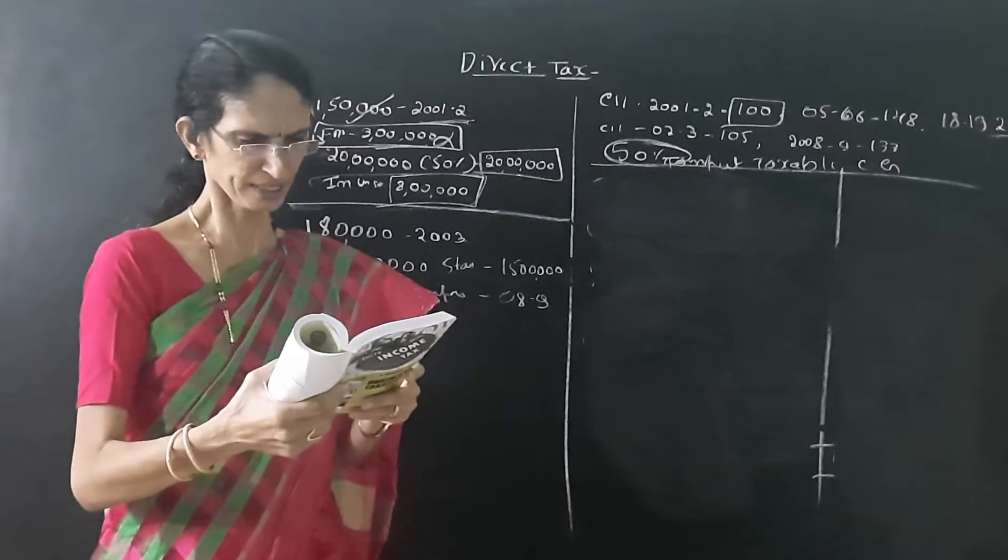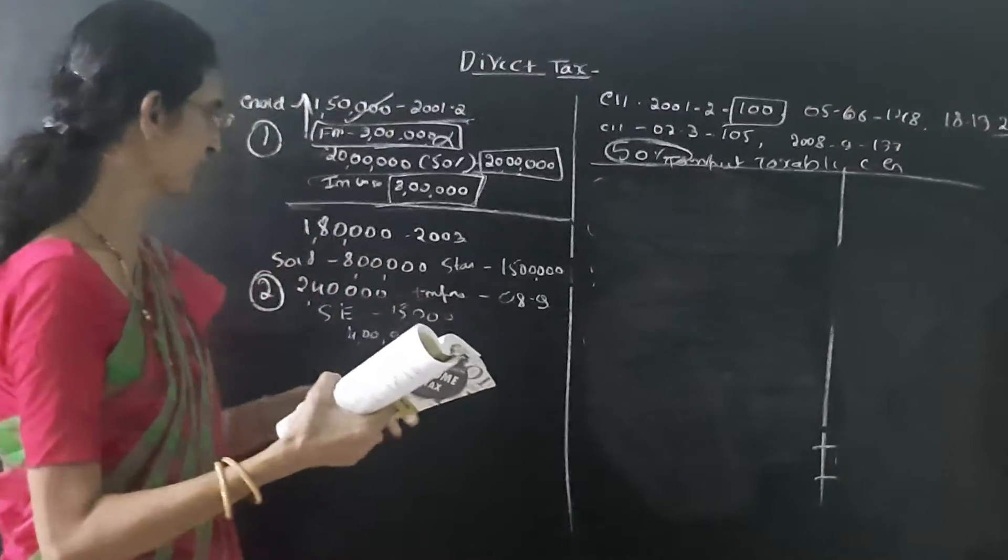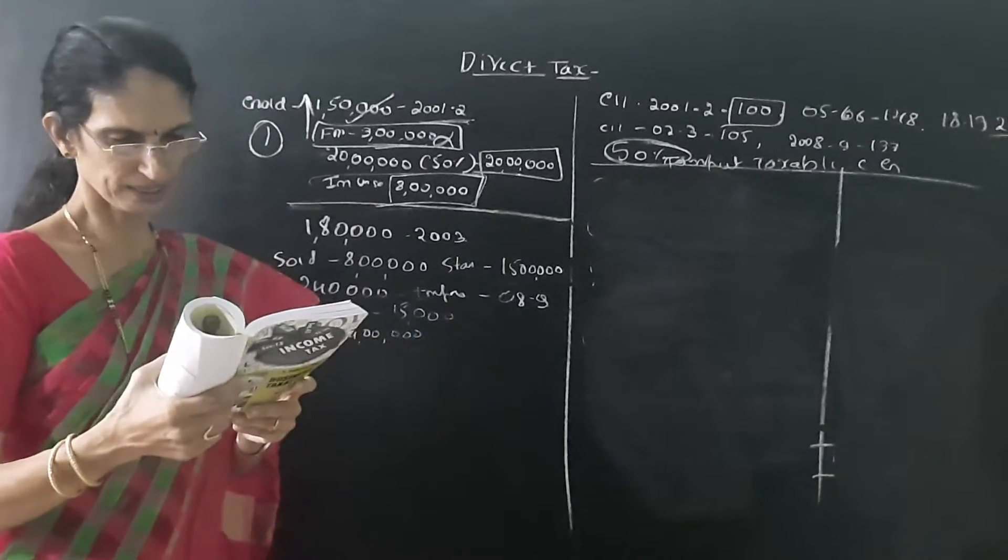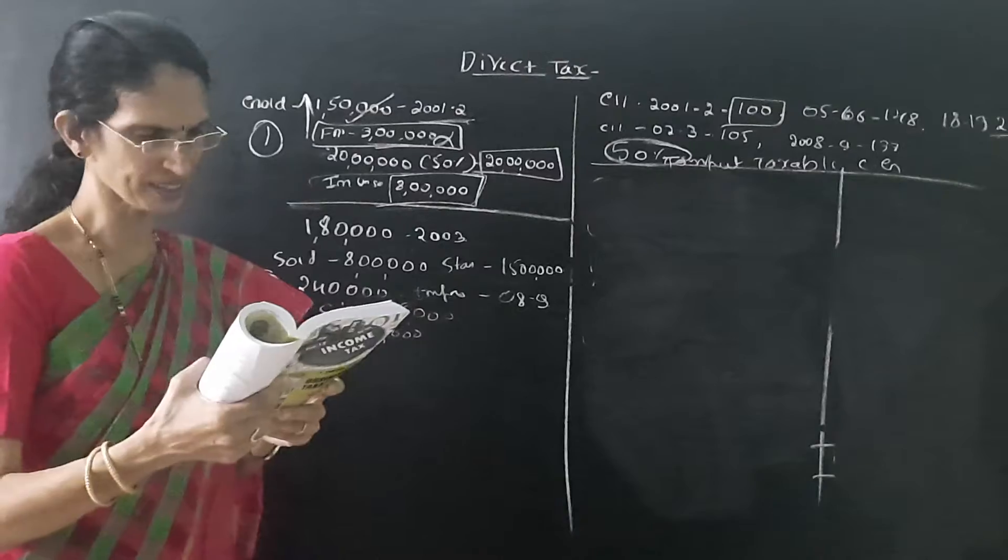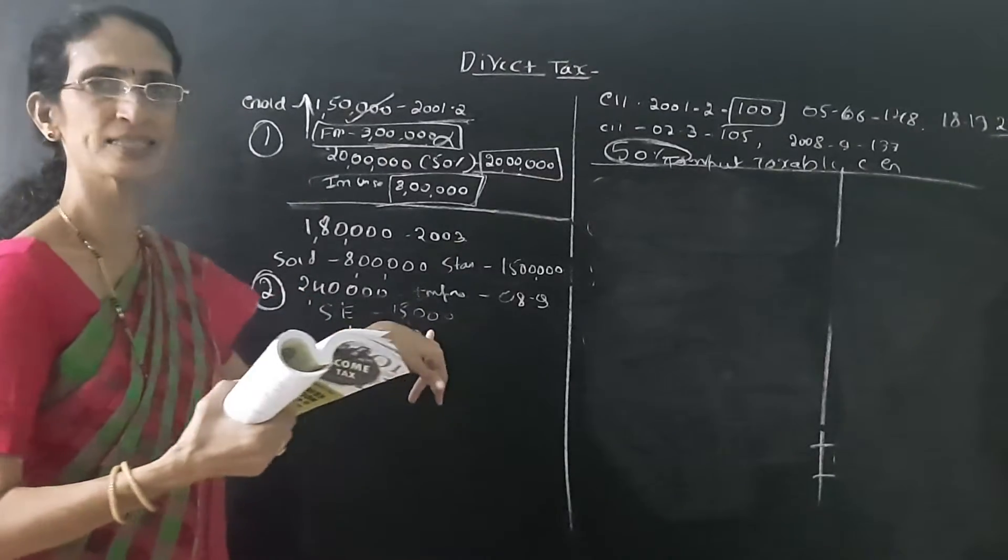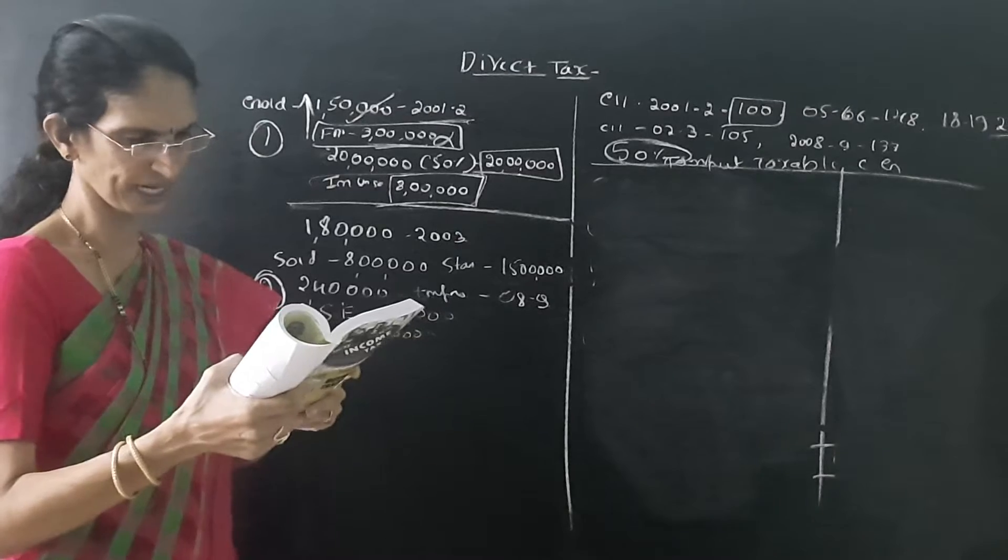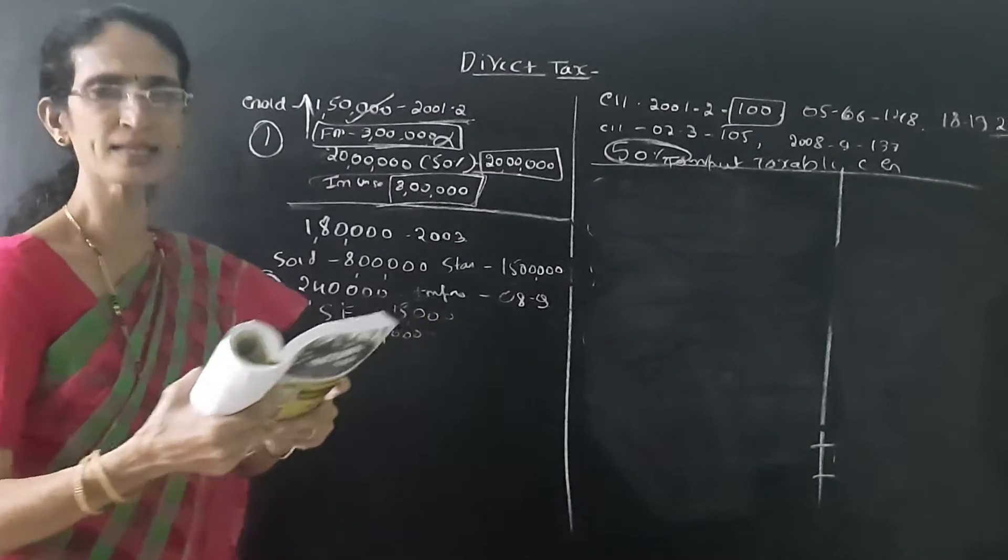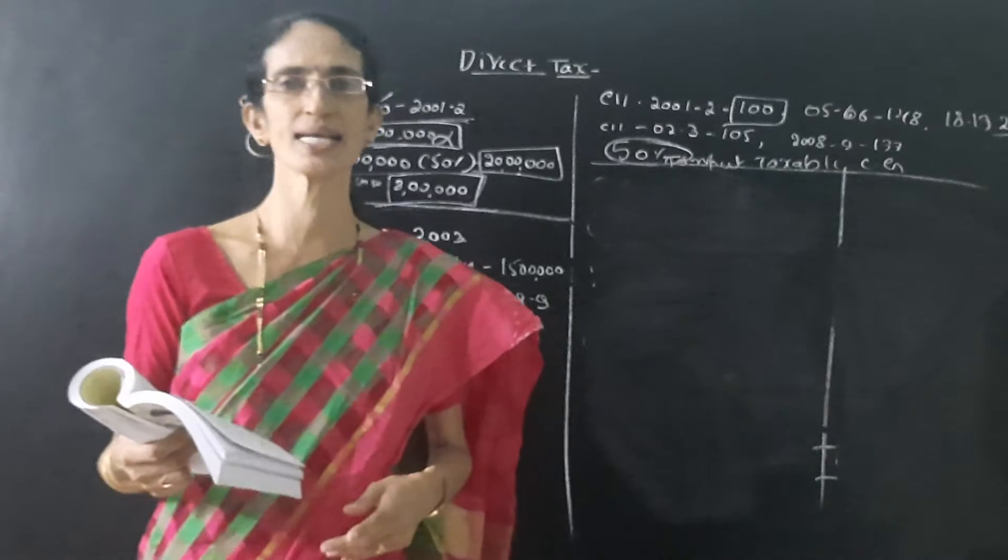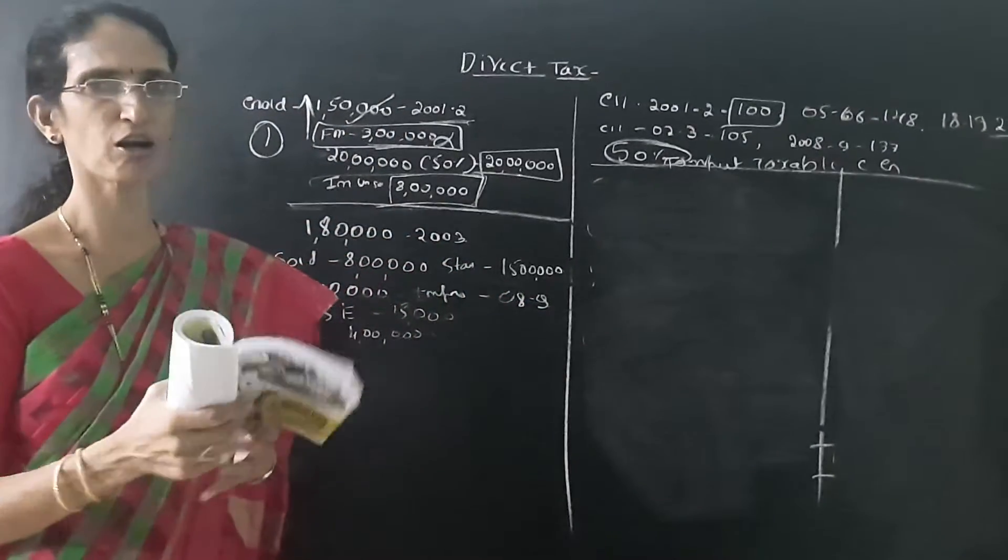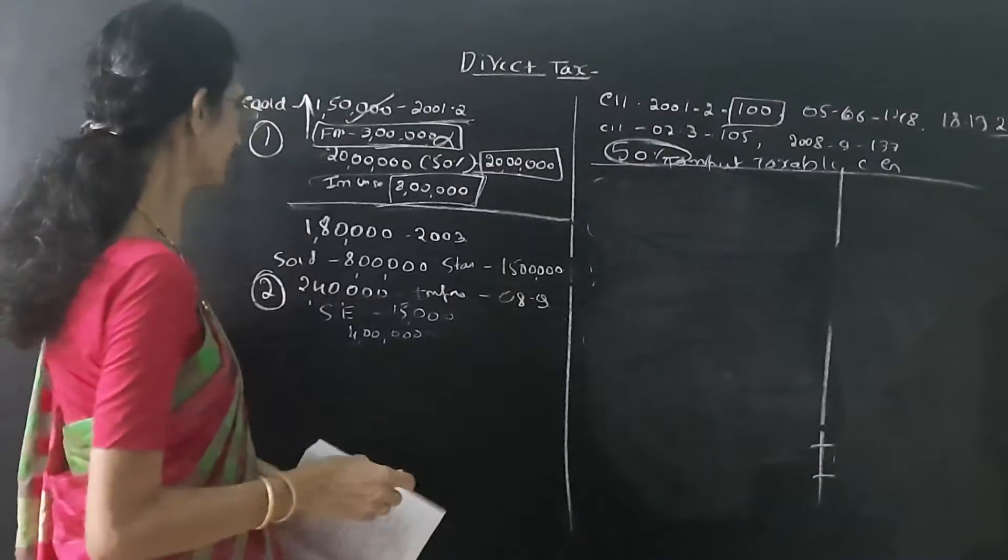He had spent Rs. 2,40,000 in 2008 in addition to the house. That is, the improvement made to the house. Then, the selling expenses amounted to Rs. 15,000. In July 2009, he deposited Rs. 4,00,000 in CGAS.